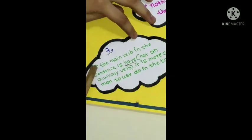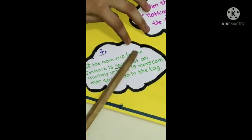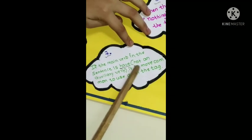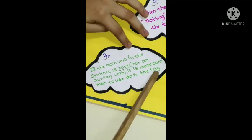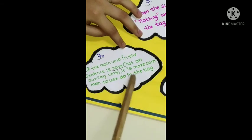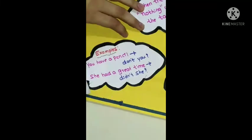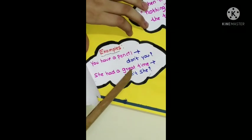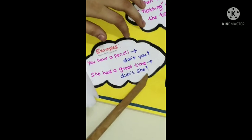Seventh point is if the main verb in the sentence is have, not an auxiliary verb, it is more common to use do in the tag. Examples: You have a pencil, don't you? She had a great time, didn't she?